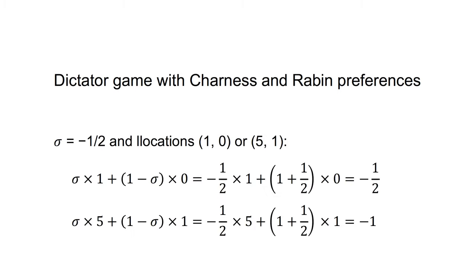Consider the following example. A dictator has less than the other player. Their sigma equals negative one-half. They must decide between the allocations (1, 0) — one for themselves and zero for the other — or (5, 1) — five for themselves and one for the other. The utility of (1, 0) is sigma times 1 plus (1 minus sigma) times 0, which equals negative one-half. The utility of (5, 1) equals sigma times 5 plus (1 minus sigma) times 1, which equals negative one. They prefer to allocate (1, 0) even though it is worse for them, because it is also worse for the other player.